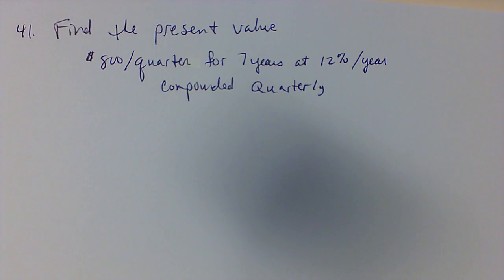All right, so on this video we're looking to find the present value for eight hundred dollars per quarter for seven years at twelve percent per year compounded quarterly.